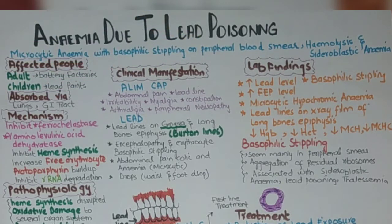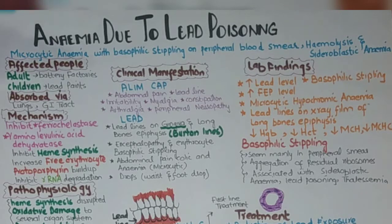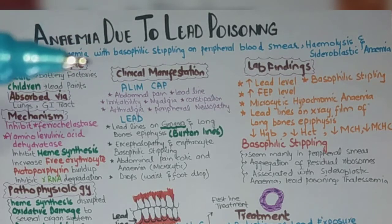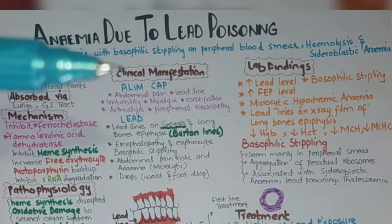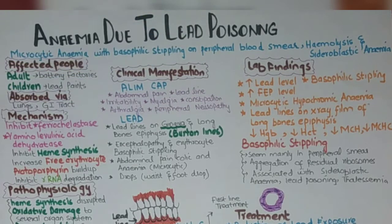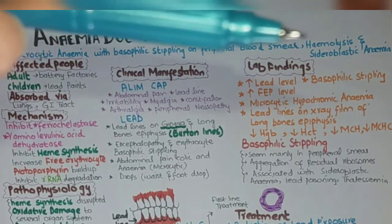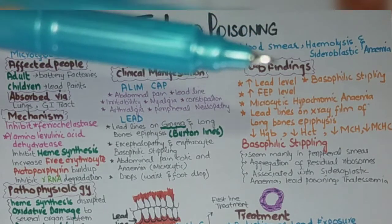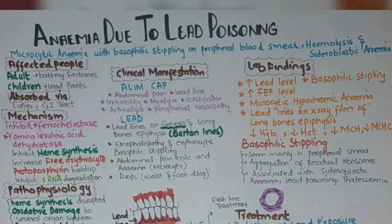First we will see the distinctive features of anemia due to lead poisoning. It is microcytic anemia with basophilic stippling — aggregation of the residual ribosome on the peripheral blood smear — hemolysis, destruction and lysis of the RBC, and sideroblastic anemia-like features.